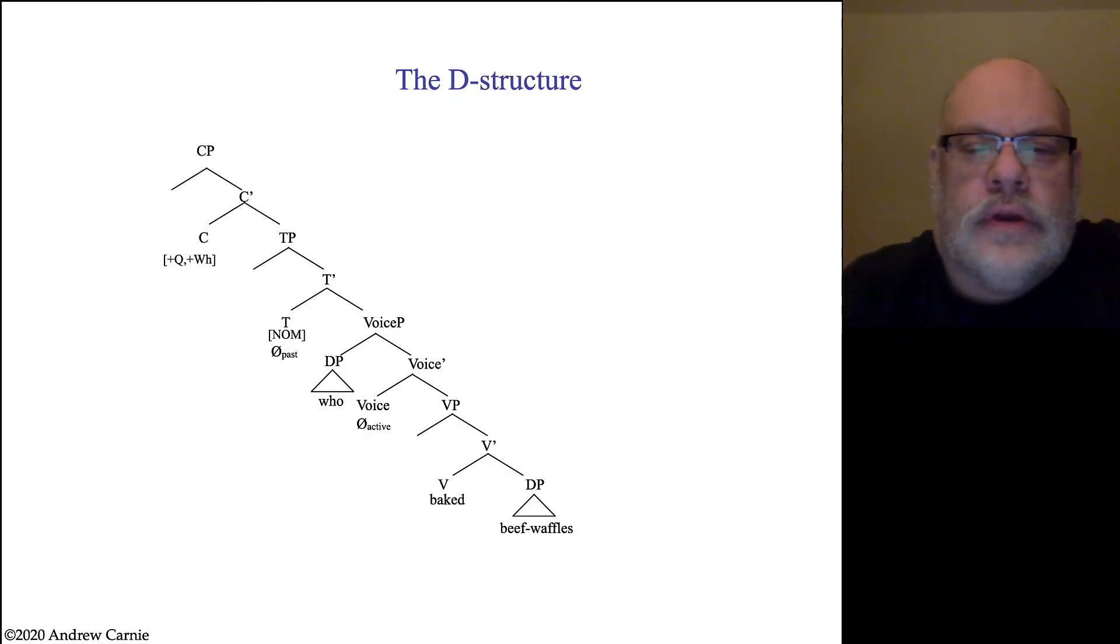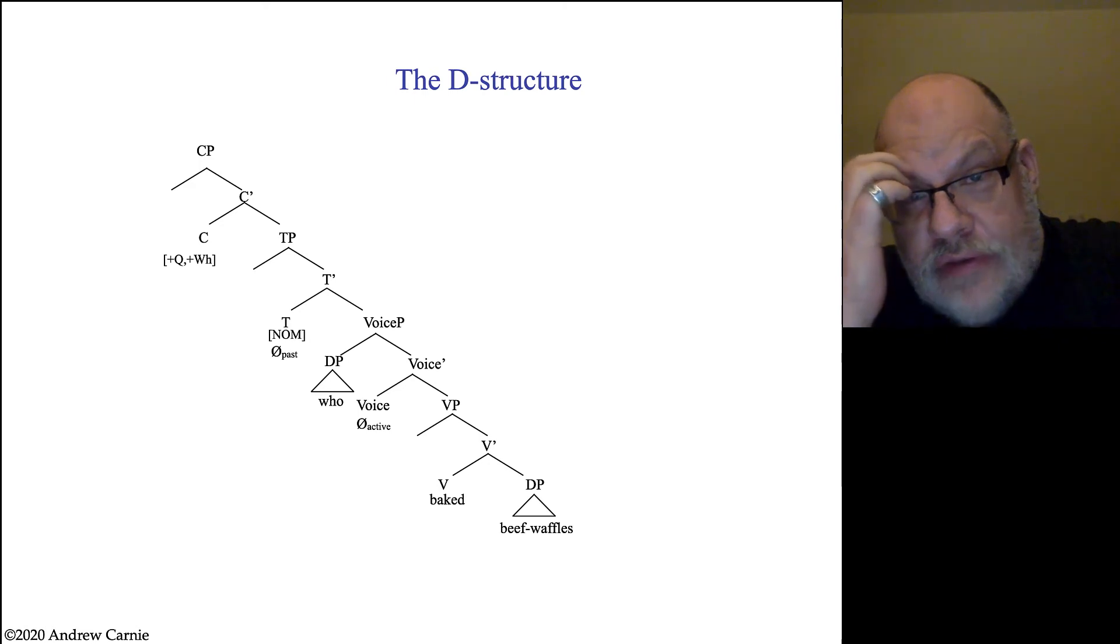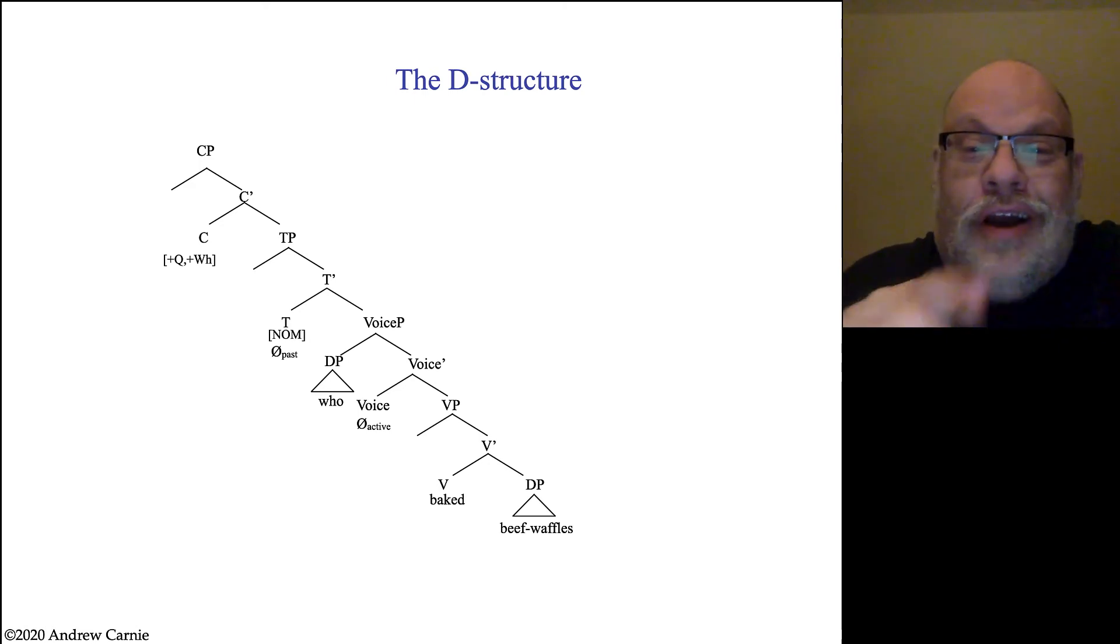So the structure we are going to tree is who baked the beef waffles. And our D structure, our structure before we do any movement, the structure that is subject to the theta criterion, actually already has this order. Who, you can see this right here, who baked the beef waffles.